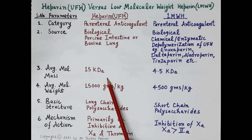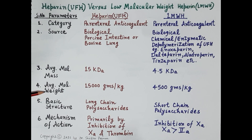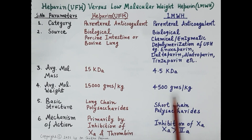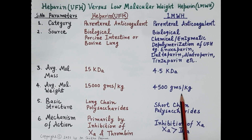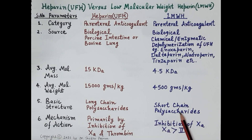The average molecular mass of unfractionated heparin is 15 kilodaltons, while that of low molecular weight heparin is 4 to 5 kilodaltons. The average molecular weight of unfractionated heparin is 15,000 grams per kilogram, whereas that of low molecular weight heparin is 4,500 grams per kilogram. Regarding basic structure, heparin is a mixture of long polysaccharide chains, whereas low molecular weight heparin is a mixture of short polysaccharide chains.